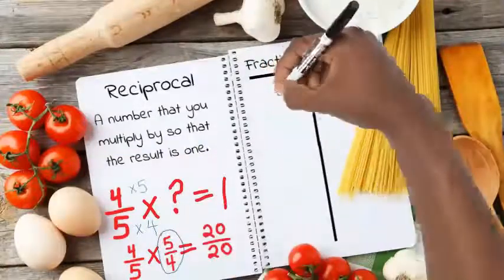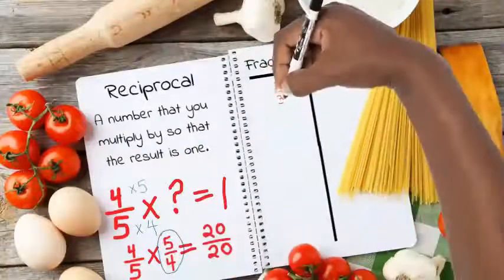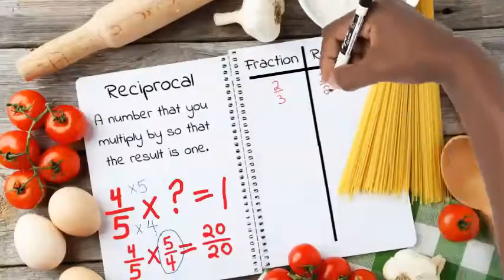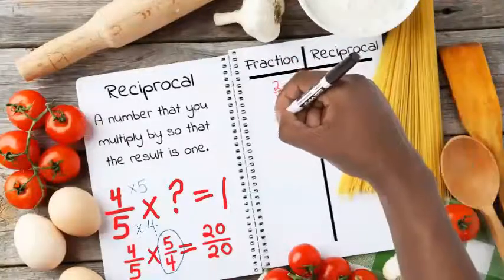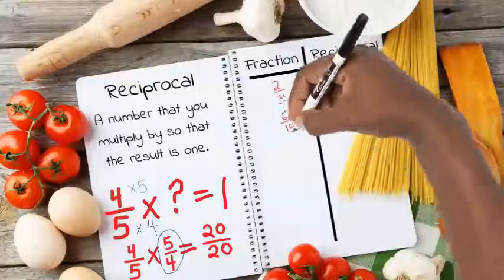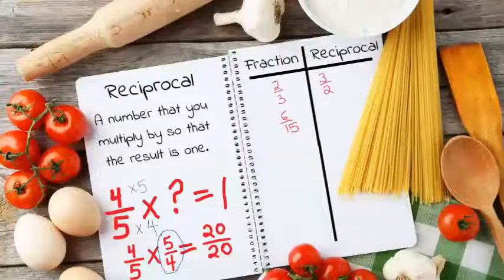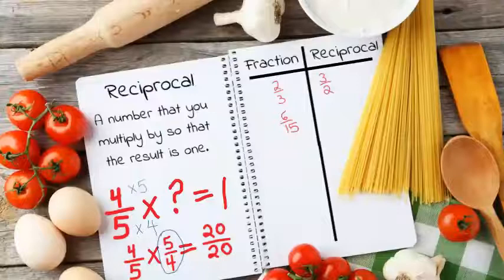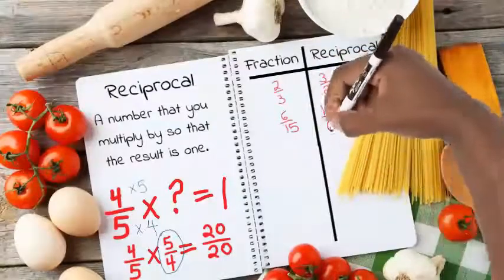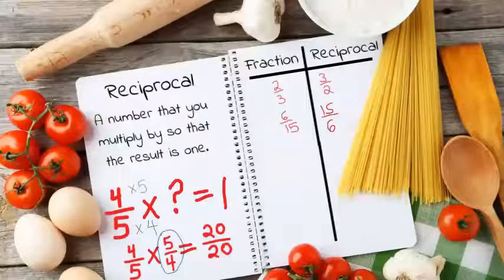Let's try 2 thirds. If I multiply it by 3 halves, I get 1 whole. What about 6 fifteenths? Give it a try — what can I multiply by to get 1 whole?